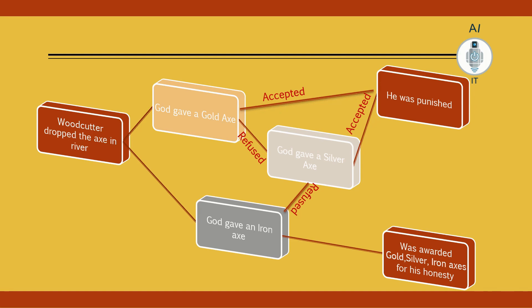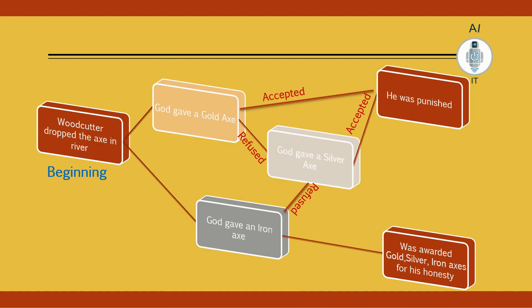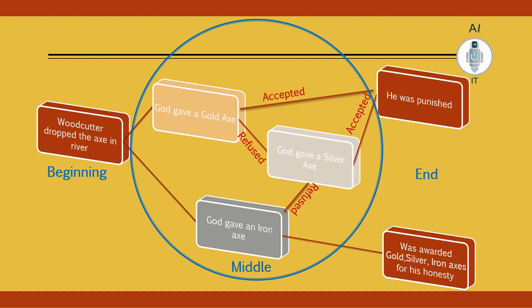If you see how the story progresses, we can create a tree-like structure with a beginning, middle, and end — this is the kind of navigation map I was talking about. The story begins with the woodcutter dropping the axe in the river. In the middle, God offers a gold axe or an iron axe. If he accepted the gold axe, he would have been punished. If he refused, he would be given the option of a silver axe. Again, if he accepted the silver axe, he would be punished. But if he refused, he would be given an iron axe, and accepting the iron axe would reward him with all three axes for his honesty. The end of the story is either he was punished, or he was awarded all three axes.